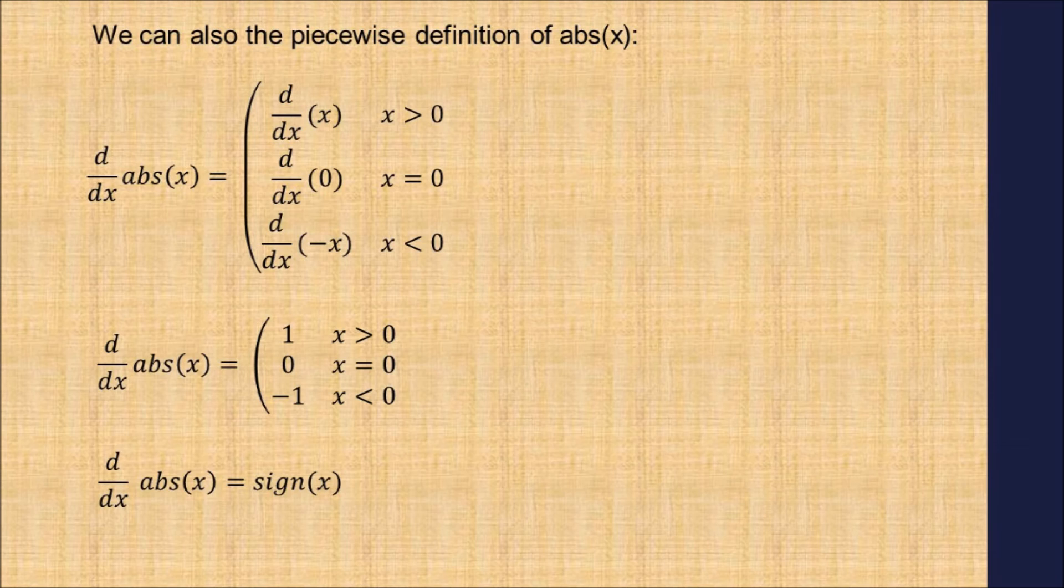We can also illustrate the derivative of the absolute value of x is the signum of x by using the piecewise definition. Here we take the derivative of each piece and note that the result fits the definition of the signum function.